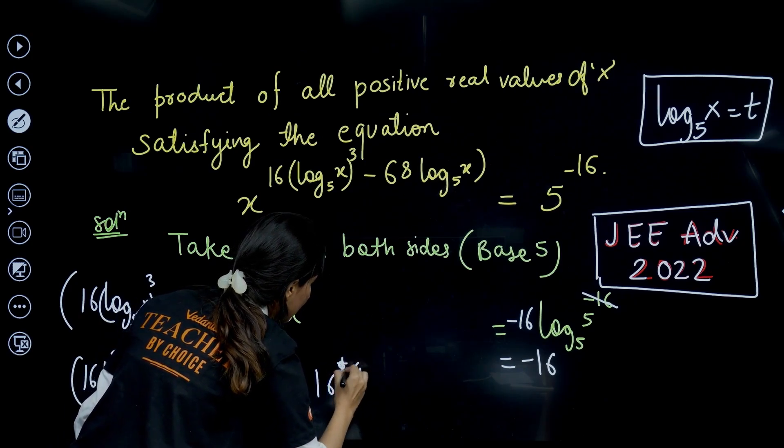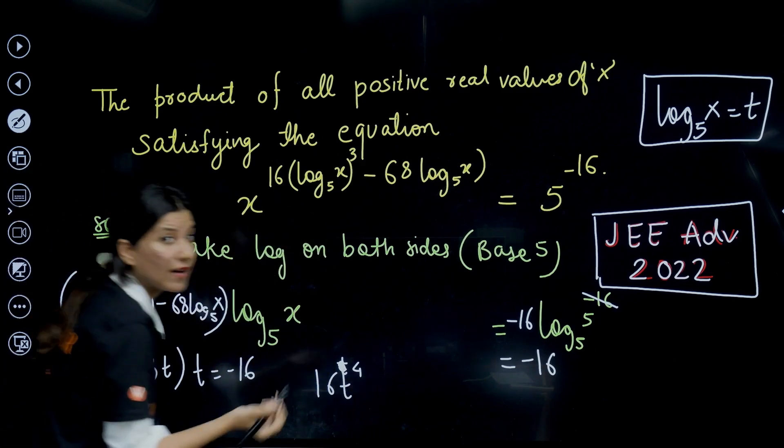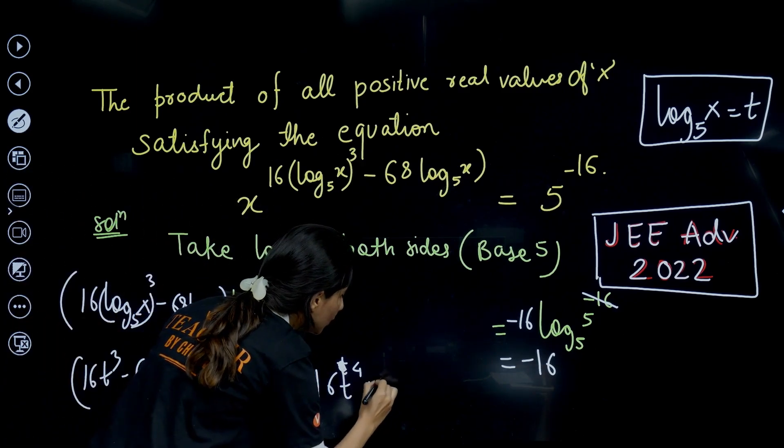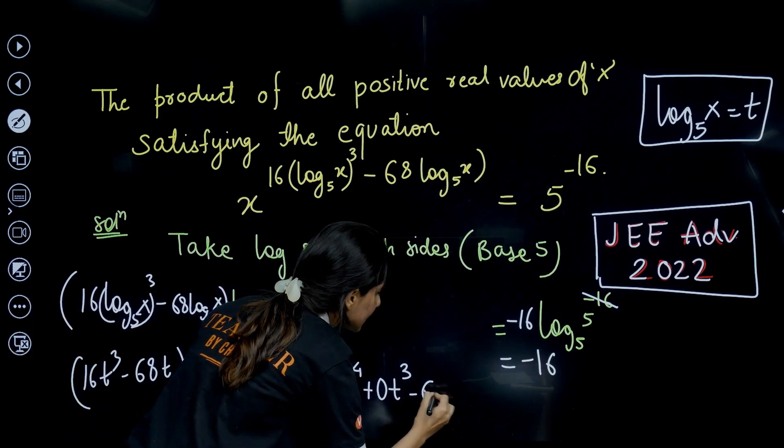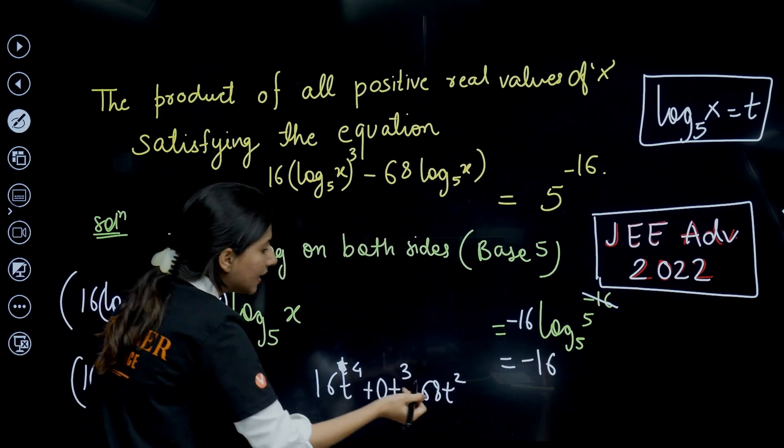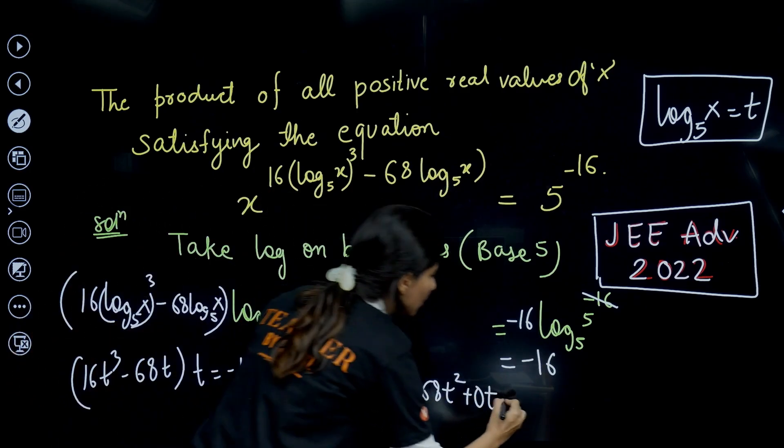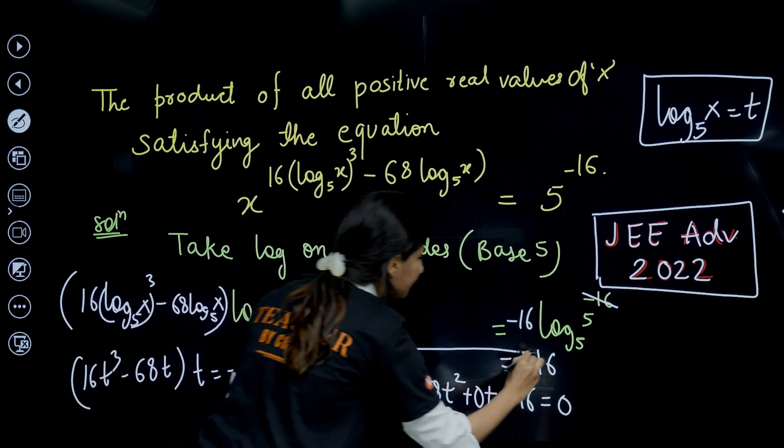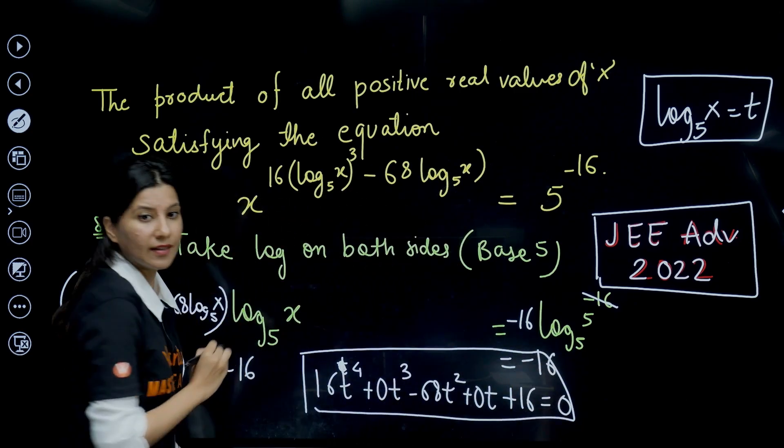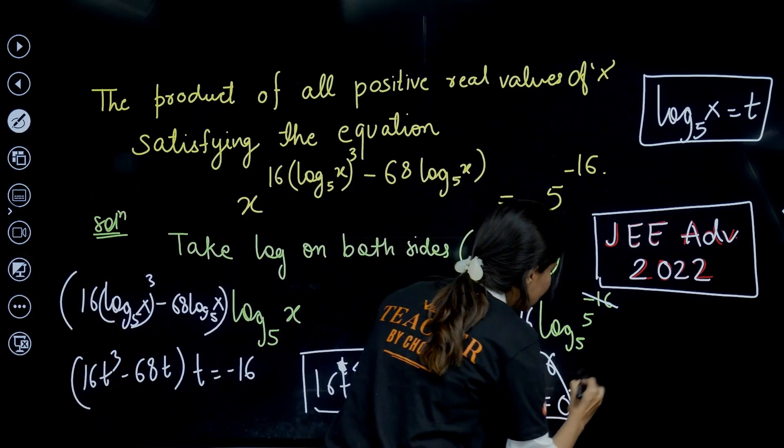This is clearly a biquadratic power 4 equation in t. If I solve it, 16t⁴ minus 68t² and then we are having 0t and last but not the least we are having a constant term plus 16. So it's 16t⁴ - 68t² + 16 = 0.